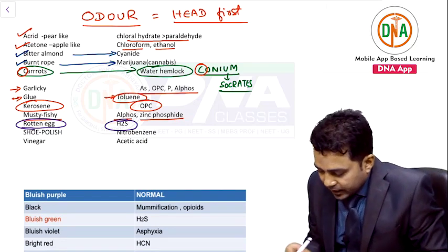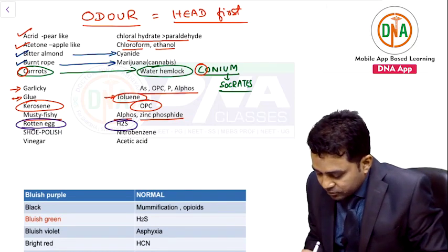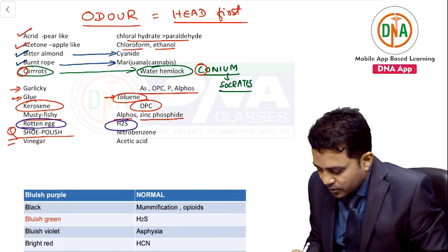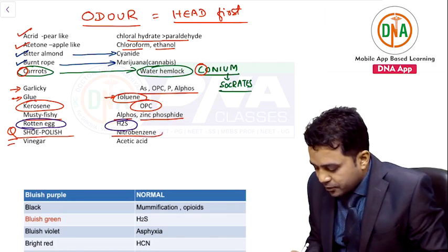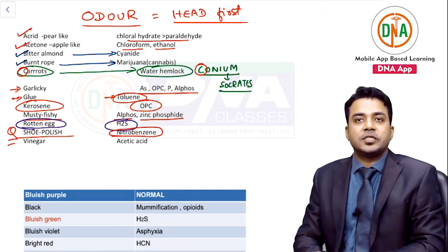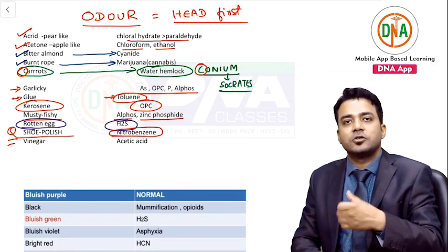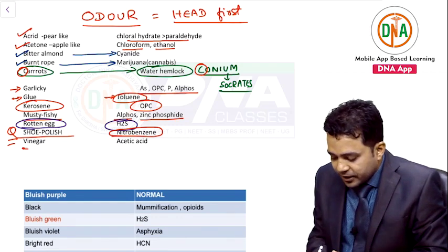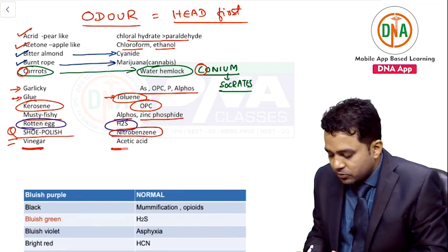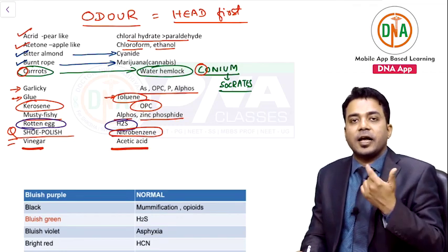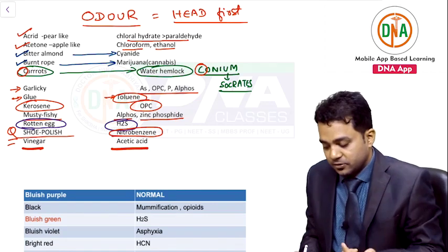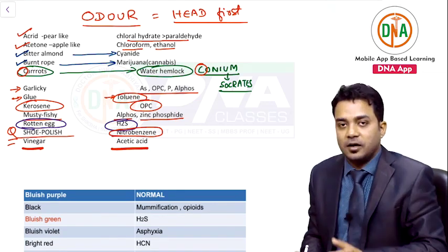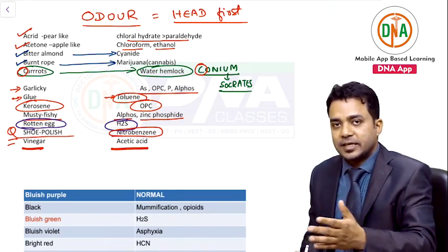From alphabet S: shoe polish smell — nitrobenzene. This is a question from AIIMS exams. Vinegar-like smell is due to acetic acid — vinegar is called sirka in Hindi, so acetic acid.